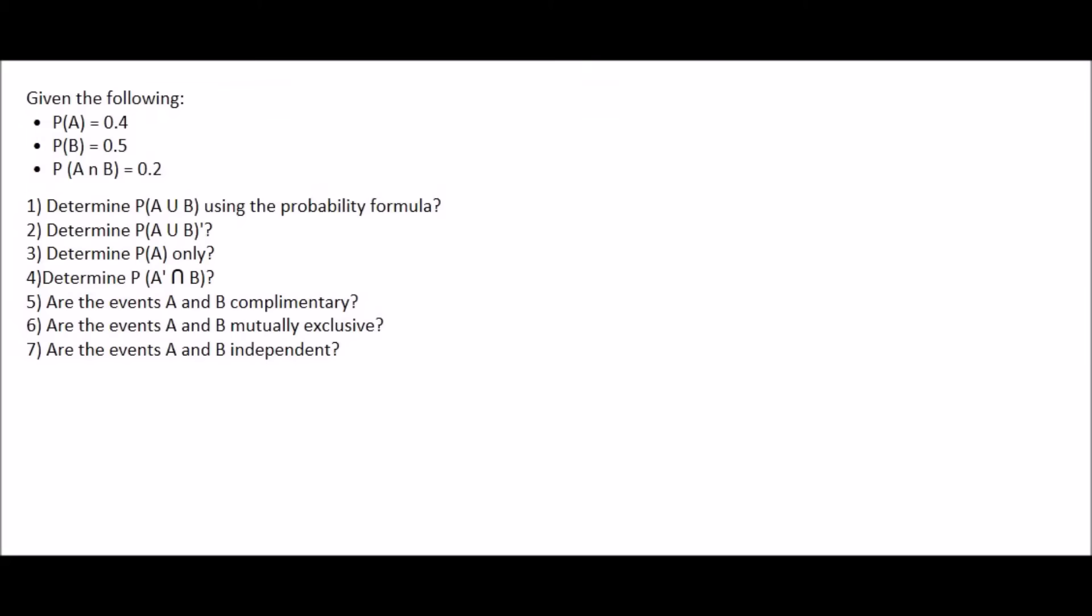In this question, we are given that the probability of event A is 0.4, B is 0.5, and the probability of A and B is 0.2.